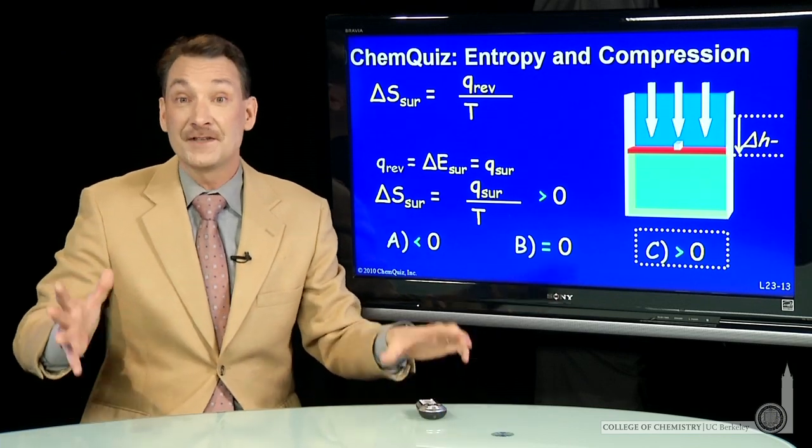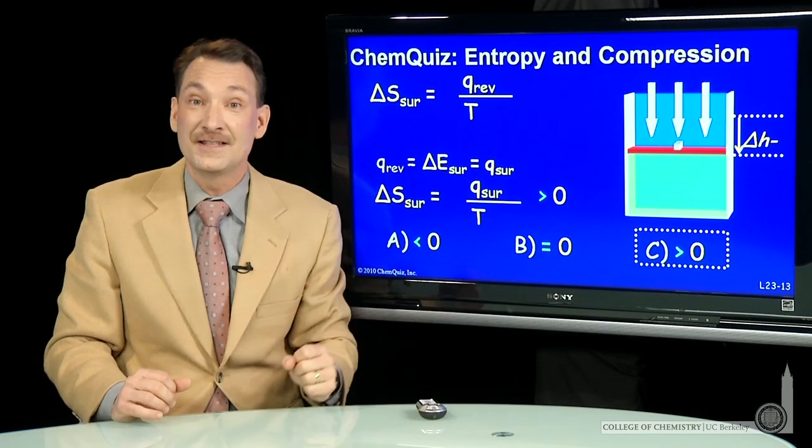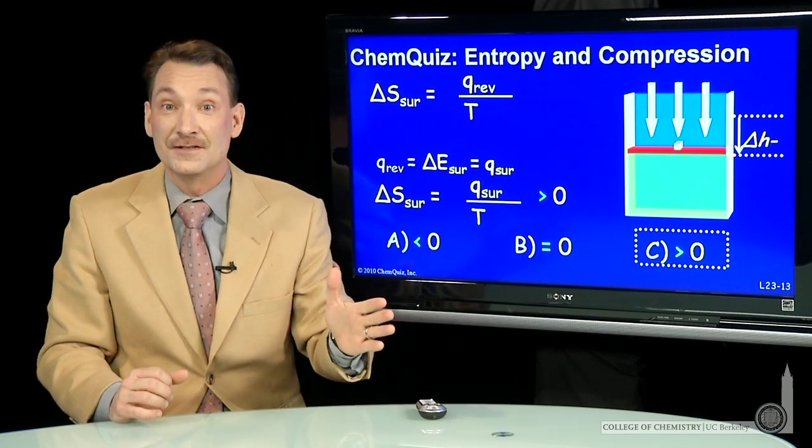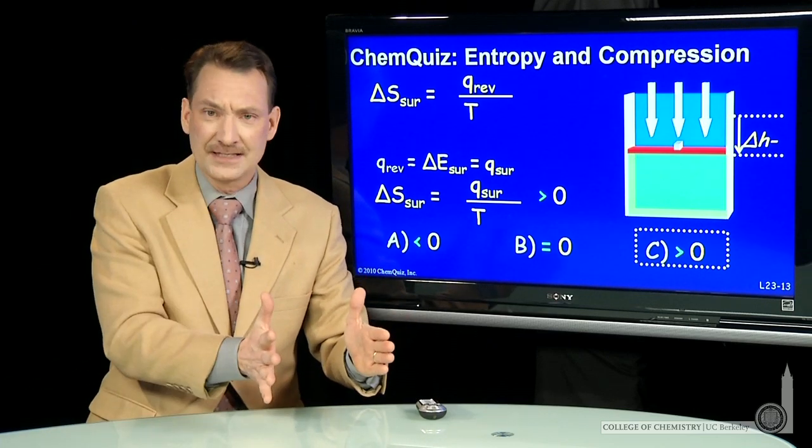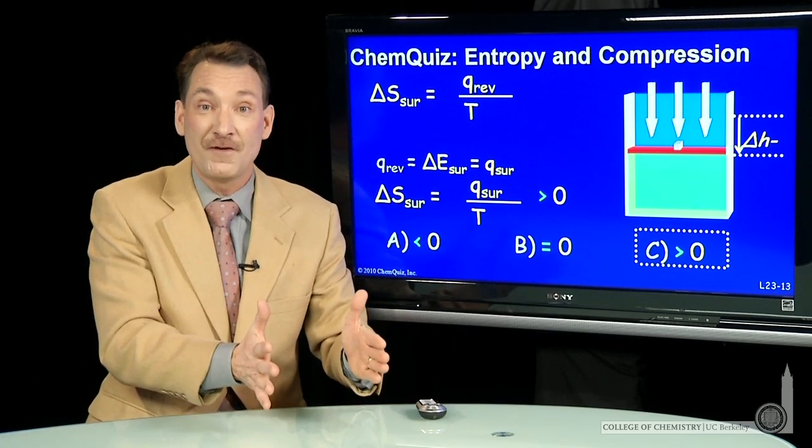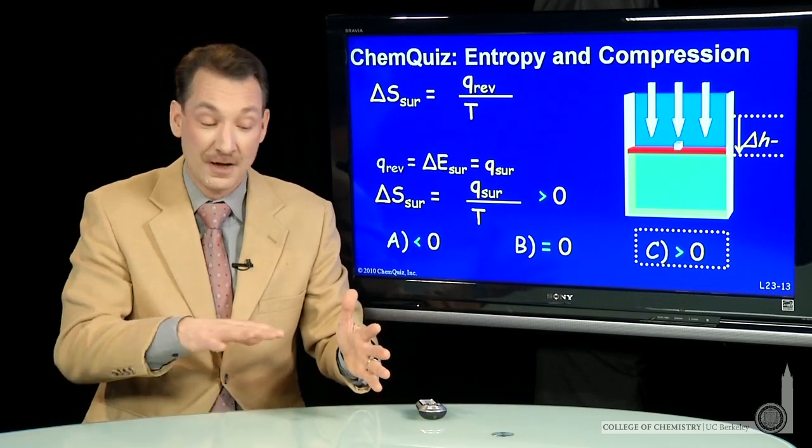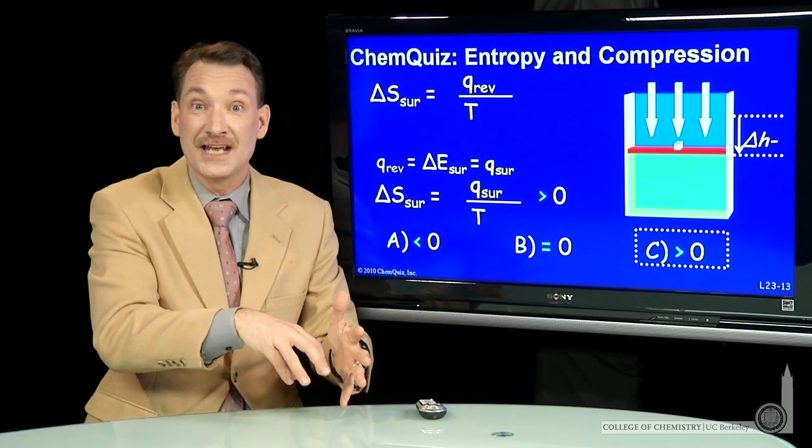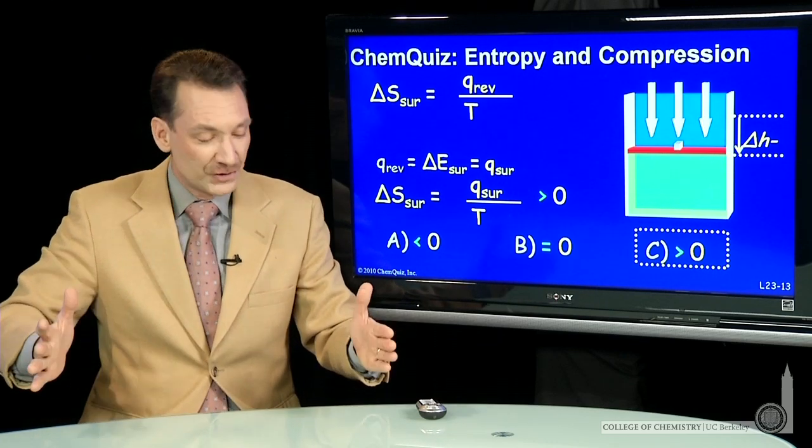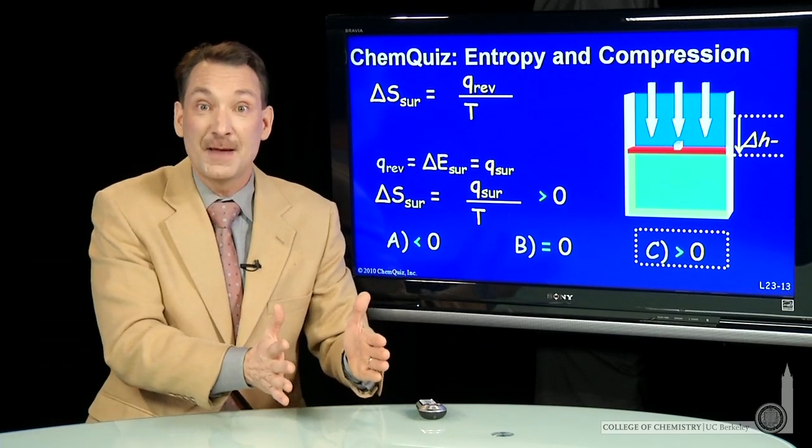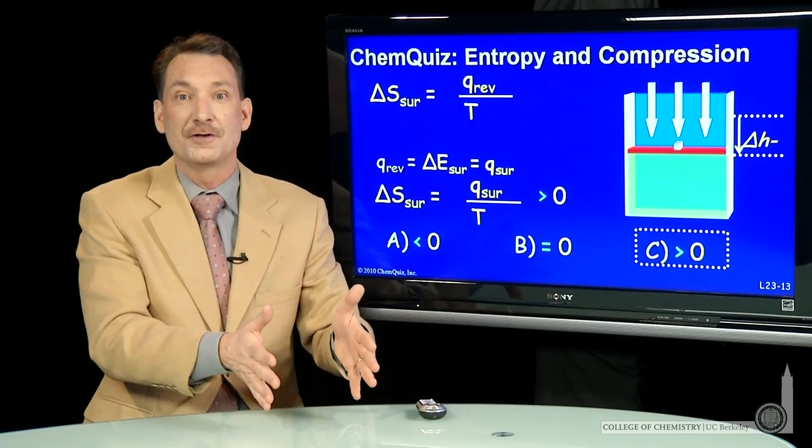Now, notice the entropy of the system, the gas in this piston, decreases. I squeeze the gas down. I go to lower volume. And in general, lower volume, lower entropy. Fewer ways to arrange a state in a low volume than a high volume. So lower volume of the system at the same temperature, lower entropy.